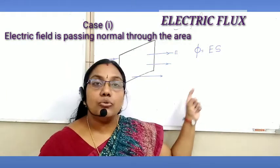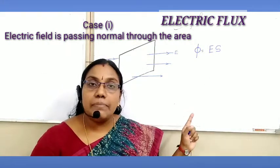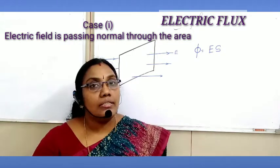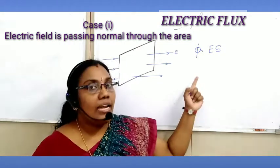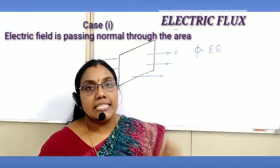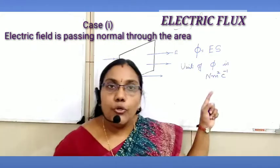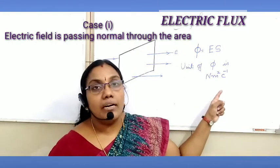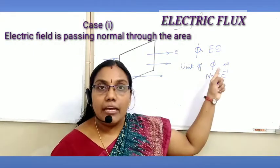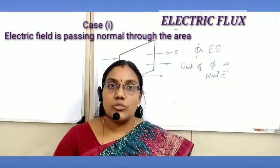Electric flux passing through the area is φ = ES. The unit of electric flux is Newton meter square per coulomb, because the unit of electric field is Newton per coulomb and area is meter square. So the SI unit of electric flux is Newton meter square per coulomb.